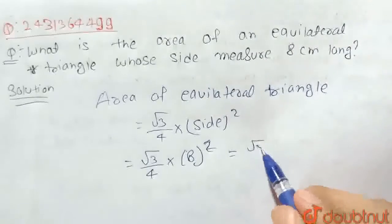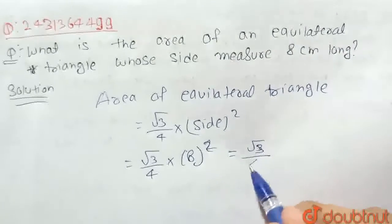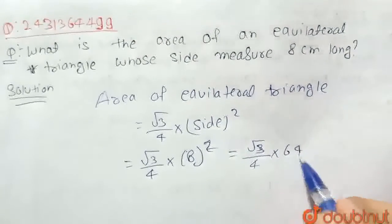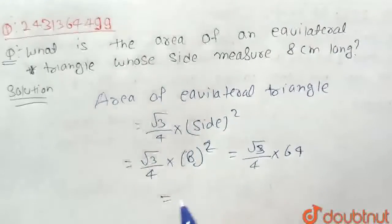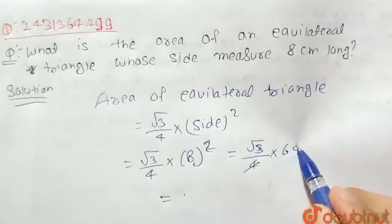So, square root of 3, let's calculate: square root of 3 upon 4 multiply 64, then we will get...